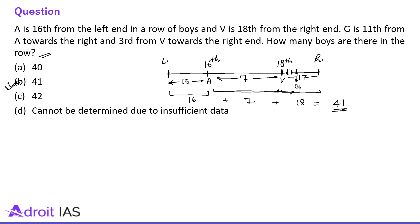So total 41 boys are there in the row. This question belongs to the number ranking topic. You should practice these type of questions to solve them correctly and within the given time in the examination. The ideal solving time is 60 seconds — not more than that.